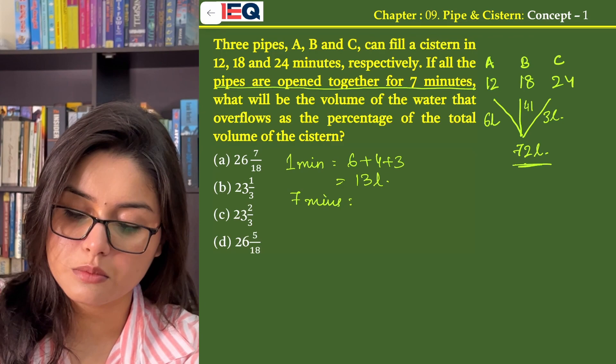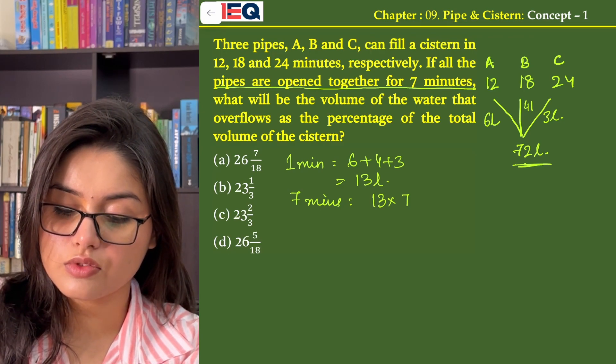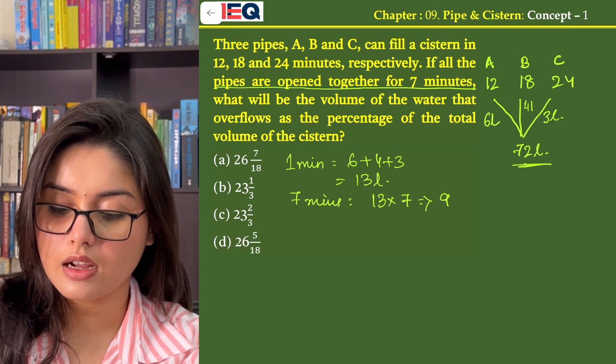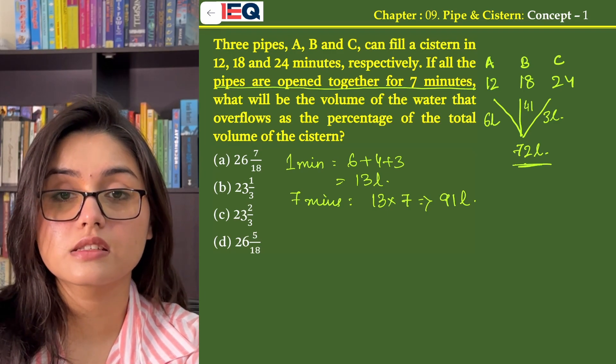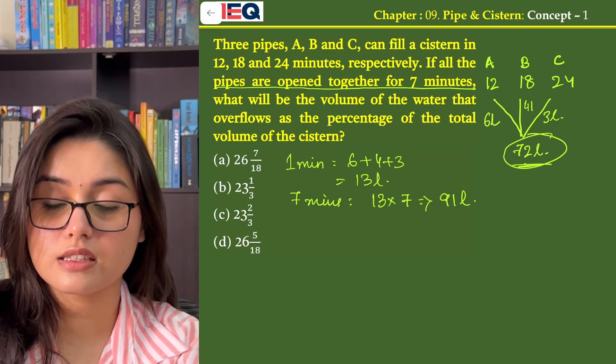they will fill how much in 7 minutes? 13 into 7 that is equal to 91 litres. But the total capacity of the cistern we found is 72.